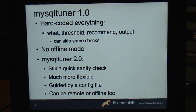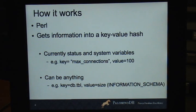So how does it work? Well, it's in Perl, just like the original MySQL tuner. It gets the information into a key-value hash. So whether it gets the information by querying show global status or by slurping in from a file that has that output. Currently, it's just status and system variables. So for example, a key is max_connections, value is 100. But it could be anything. For example, you could have the key be the database.table name, and the value is the size of the index plus data from information schema. That's not in MySQL tuner 2.0 yet, but it could be. Because it just gets some data and however you get the data, then you can parse it.